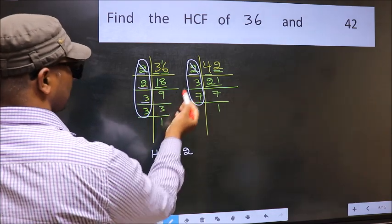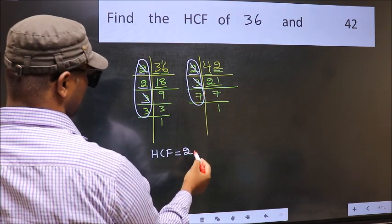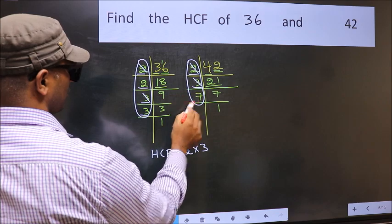Next number 3. Do we have 3 here? Yes. So cut 3 right here. Next number 3. Do we have 3 here? No.